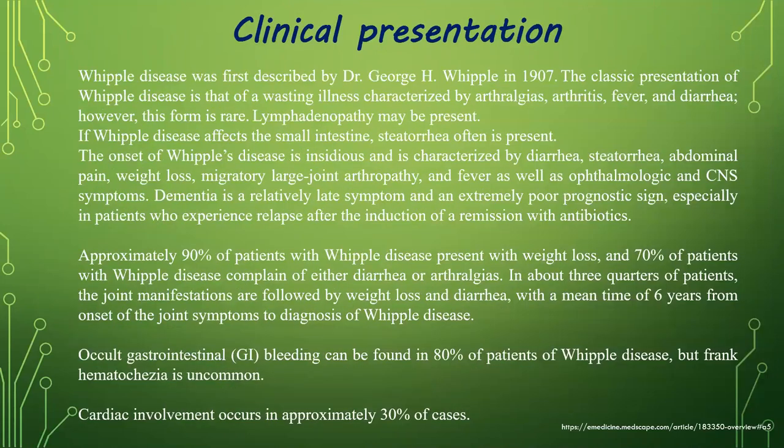This disorder was first described by George Whipple in 1907. The classic presentation of Whipple disease is that of a wasting illness characterized by arthritis, fever, and diarrhea, though this full triad is rare. Lymphadenopathy may be present. If Whipple disease affects the small intestine, steatorrhea is often present. The onset is insidious and characterized by diarrhea, arthralgia, abdominal pain, weight loss, migratory large joint arthropathy, and fever, as well as ophthalmologic and central nervous system symptoms. Dementia is a relatively late symptom and an extremely poor prognostic sign, especially in patients who relapse after the induction of remission with antibiotics.